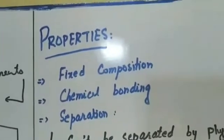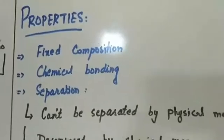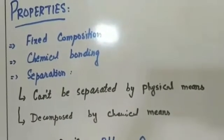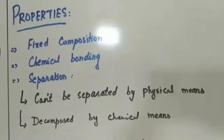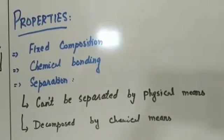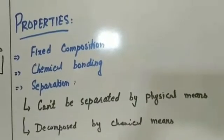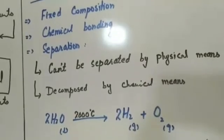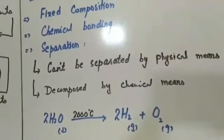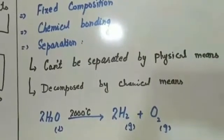Now the properties of compounds: the first is fixed composition. Second, they are chemically combined, so separation is difficult. They cannot be separated by physical means such as filtration. Since electrons are involved, they can be decomposed — meaning the compound is broken back into its components — but this requires chemical means. For example, to split water back into hydrogen and oxygen, we need about 2000 degrees centigrade of energy. This is called decomposition.